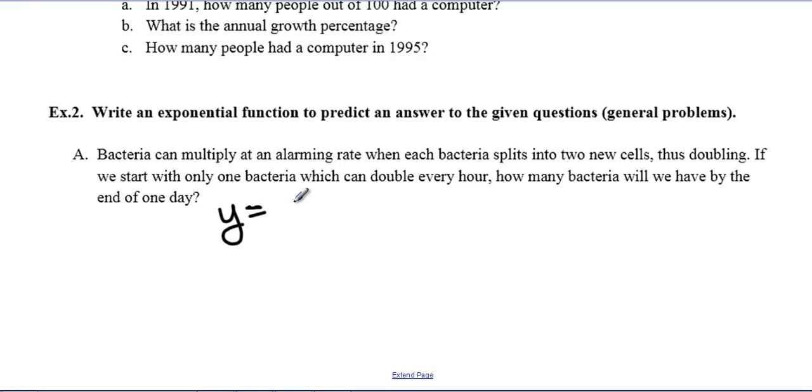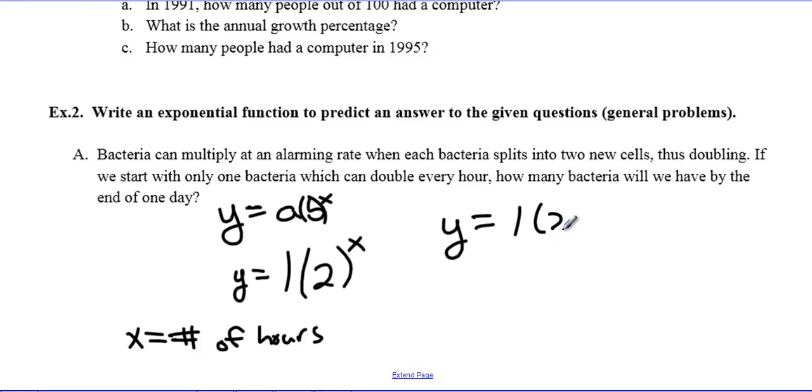If we start with only one bacteria which can double every hour, how many bacteria do we have at the end of one day? If we look at our general form, this is not a percent problem, so I'm going to look at y = a(b)^x. Our bacteria is growing, so I'm expecting my B to be bigger than 1. My initial value is 1, there's 1 bacteria cell at this point. And this thing is doubling per hour. X is the number of hours.